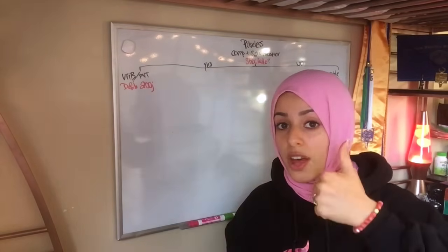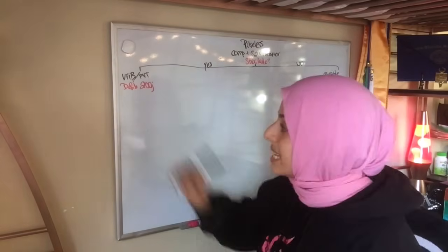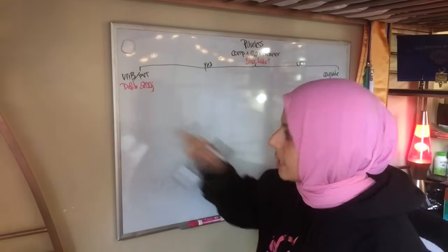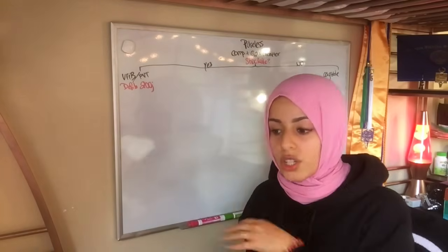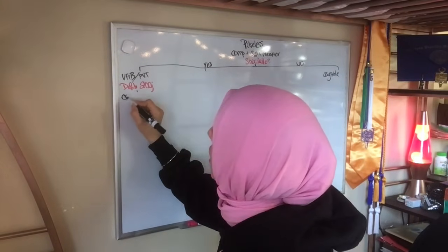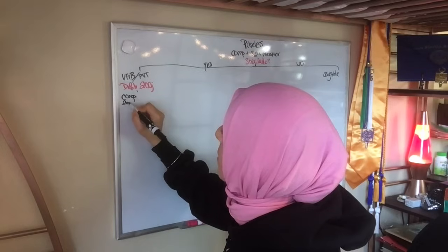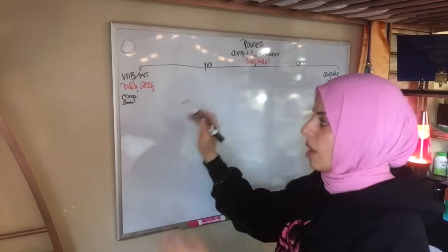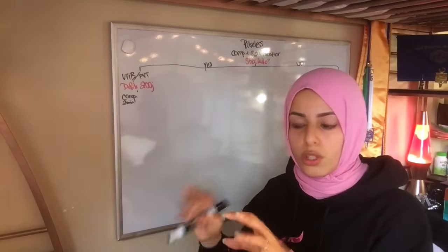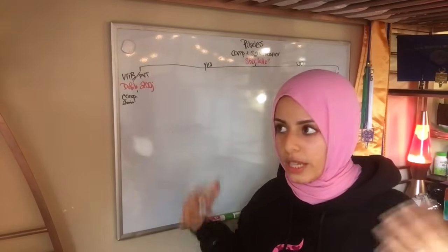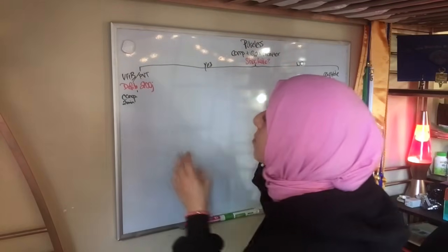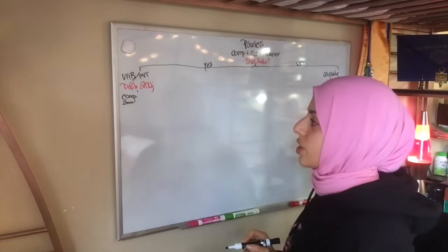Second rule of thumb — and this is a test question as well as important for real life: immediately after defibrillation, you resume compressions. No delay. Don't ever think twice about that. Defibrillation followed by compressions for two minutes. When you set up for defibrillation, you clear everybody — hands off the patient — otherwise you're shocking your whole team. Make sure everyone has cleared off the patient.